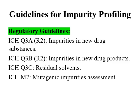Many guidelines are related to impurity profiling. The USFDA and EMA have developed and published guidelines. ICH guidelines serve as the base — specifically ICH Q3A, Q3B, Q3C, Q3D, and ICH M7 are the main guidelines related to impurities. Nitrosamine impurity guidelines are also being published and updated.